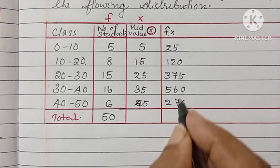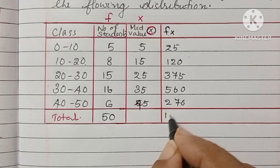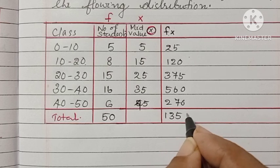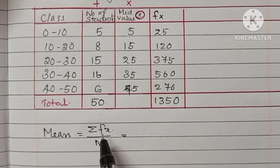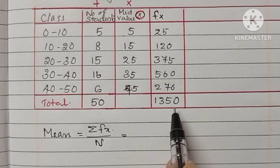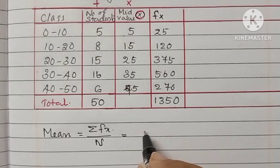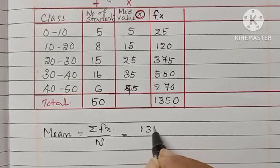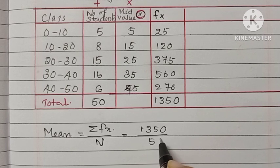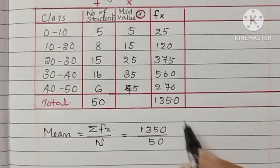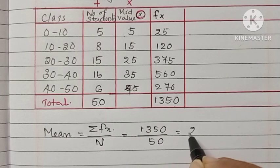The total of f into x, that is sigma fx. Sigma means find the sum, 1350. Then mean is equal to sigma fx by n, 1350 by 50. The mean is 27.